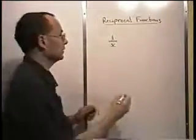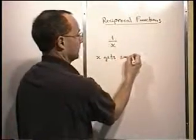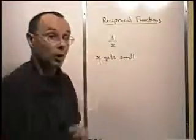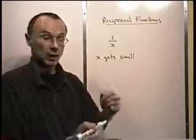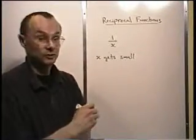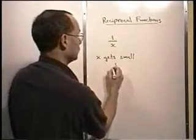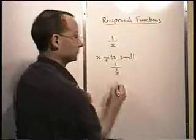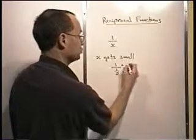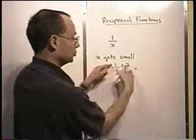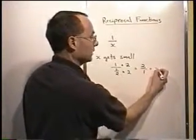Let's start by looking at what happens when x gets small. If x is progressively becoming a smaller and smaller number, what effect does that have on 1 over x? For example, if x is 1 half, we have 1 over 1 half. We simplify this complex fraction by multiplying top and bottom by 2, and we get 2 over 1, so a value of 2.